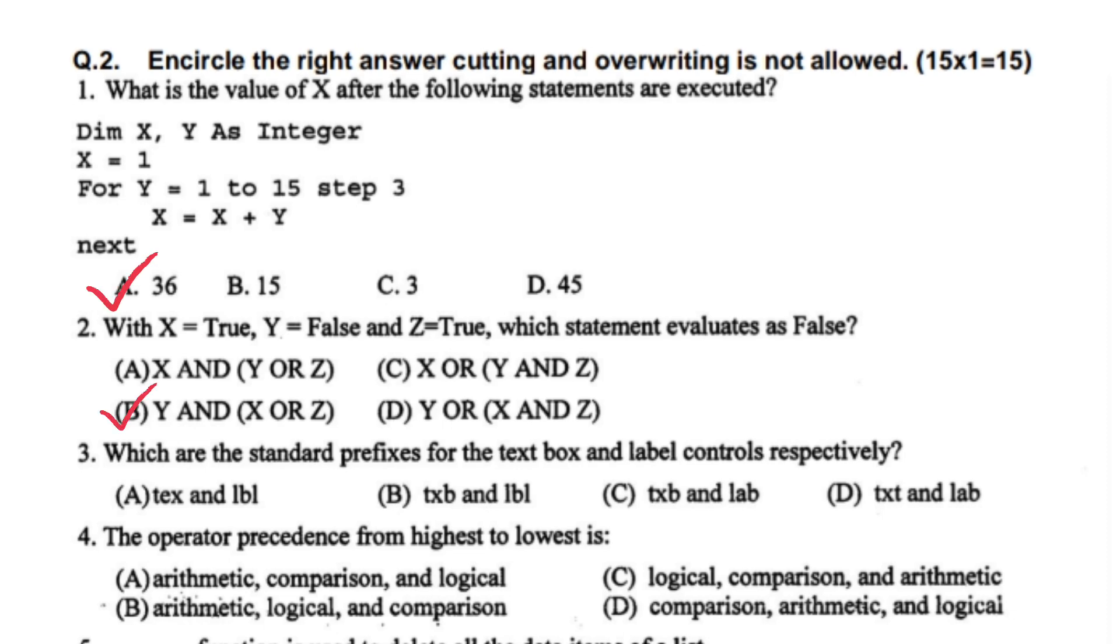Which are the standard prefixes for the text box and label control respectively? The text box is TXT and the label is LBL. In the combined option there's no option, so B option is right: TXT and LBL. The operator precedence from highest to lowest is option B, the right option: arithmetic, logical, and comparison.